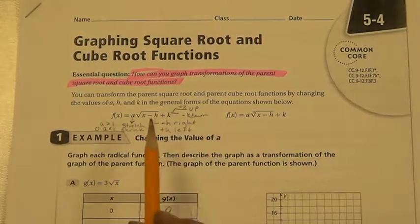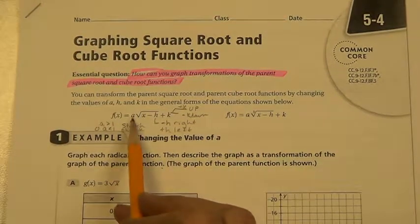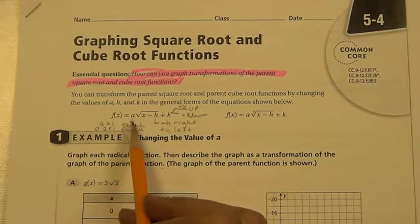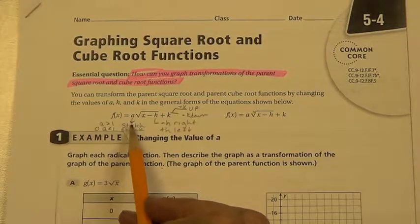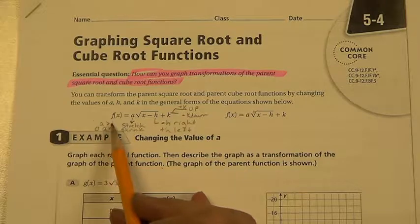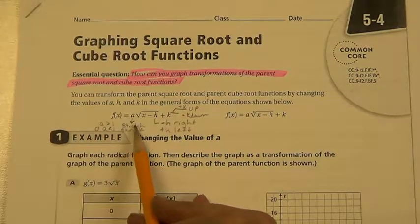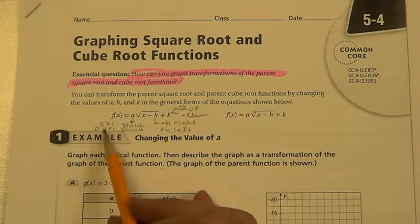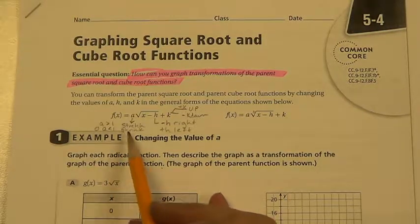In class, I went through this. We reviewed from Algebra 1 what the a shift in other functions with h and k meant, and they agreed that if the absolute value of a is greater than 1, then it's a stretch. If the absolute value of a is less than 1 and greater than 0, then it's a shrink.